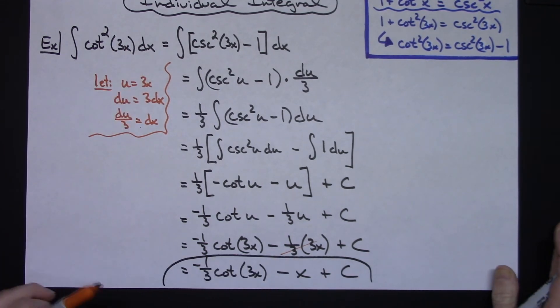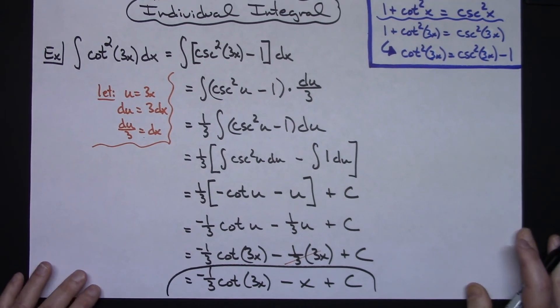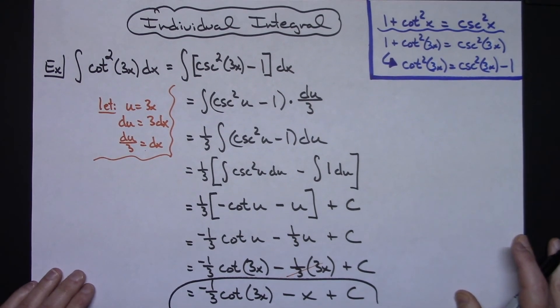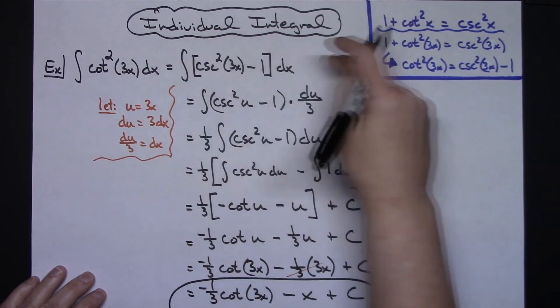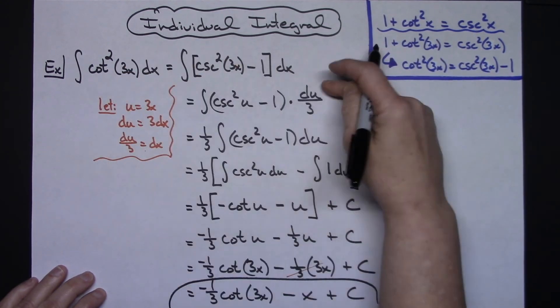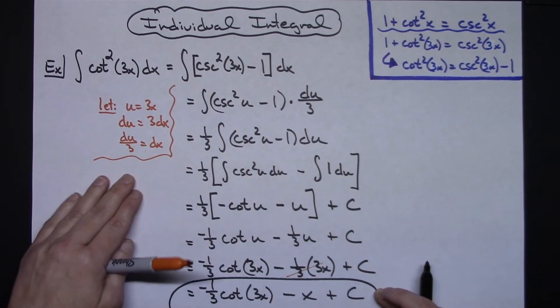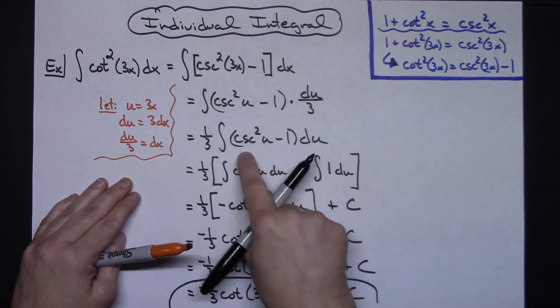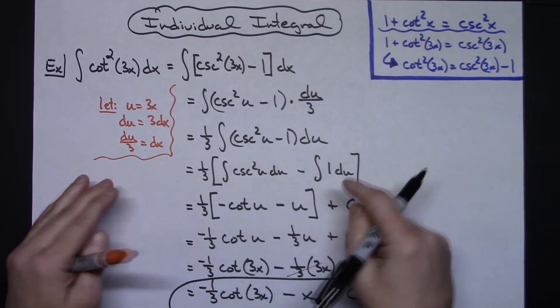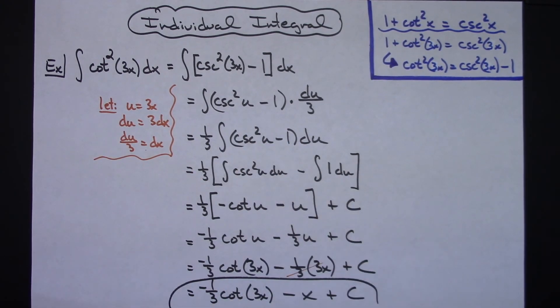So pretty much after that initial substitution of that Pythagorean identity it then became a straight u-substitution integral, and then be sure to separate that into two separate integrals and integrate them individually—straightforward problem.